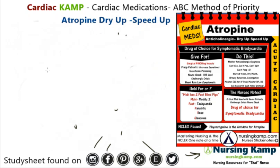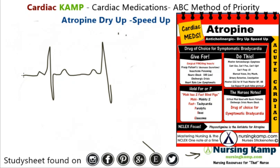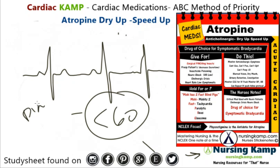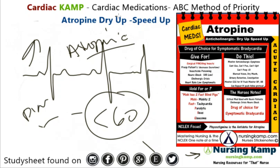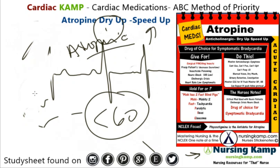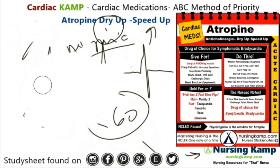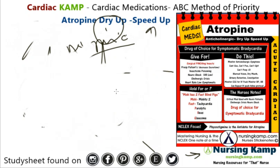When we hear about anticholinergics, and especially atropine, we're talking about patients who are symptomatic bradycardia. As part of the ACLS algorithm, symptomatic bradycardia is a slow rhythm — usually less than 60 — and if the patient is diaphoretic, cool, and clammy, we give atropine. That's an acute use. It will dry them up and speed up the heart rate — hence 'dry up, speed up.' That's the mechanism of action.